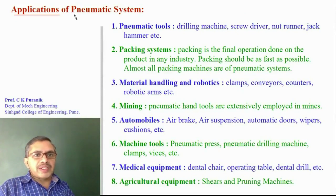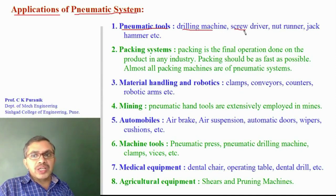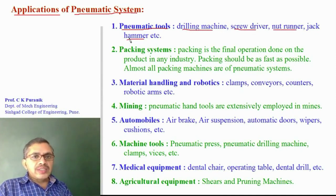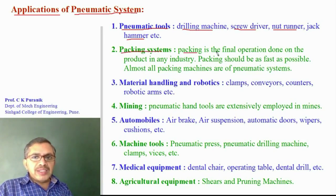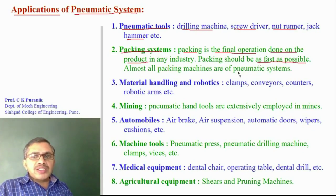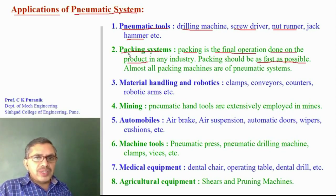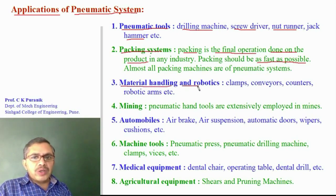Applications of pneumatic systems: Pneumatic systems are used as hand tools — relay machines, screwdrivers, nut runners, hammers, etc. Pneumatic systems are used in packing systems, since packing is the final operation done on any product and must be as fast as possible — pneumatic systems are very fast, making them ideal for packing operations. Pneumatic systems are also used in material handling and robotics — conveyors, counters, clamps, and robotic arms are all pneumatic systems.